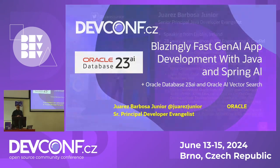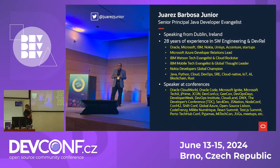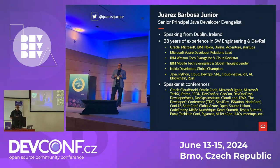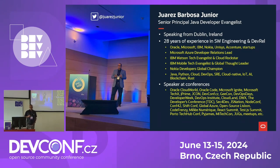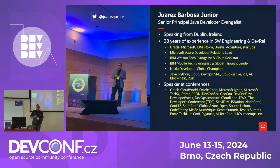My name is Juarez Barbosa Jr. I work for Oracle as a Senior Principal Java Developer Evangelist. I have over 20 years of experience in IT. You can see some companies here, interesting roles, and I'm a frequent speaker at some tech conferences. I focus on Java, Python, Cloud, and DevOps — those are primarily the technologies that I'm interested in.